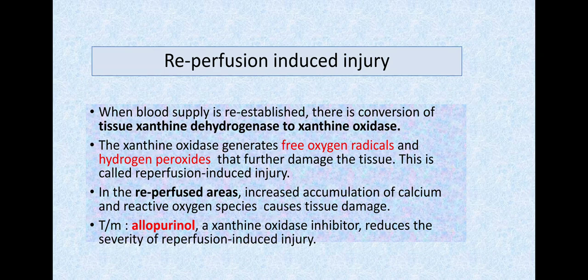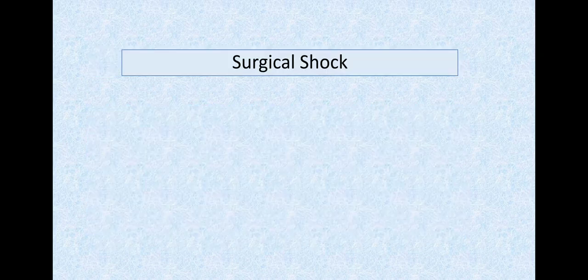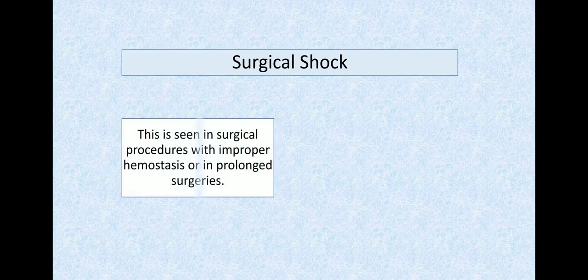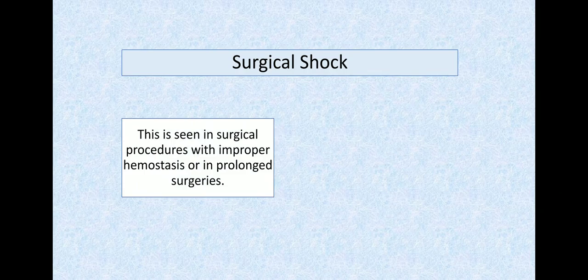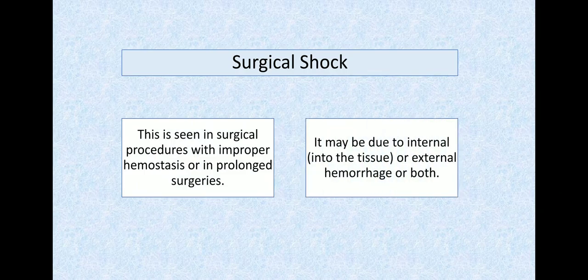Surgical shock is seen intraoperatively or postoperatively when an artery ruptures and blood comes out, or when bleeding time or clotting time is so prolonged that bleeding can't be stopped. It may be due to internal hemorrhage into tissue that you can't see, or external hemorrhage where blood is visible.